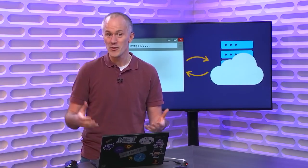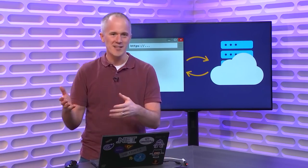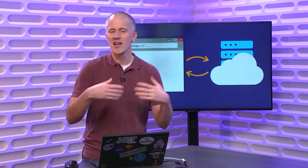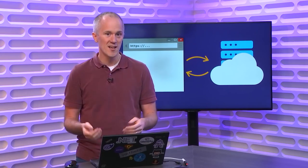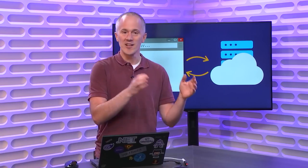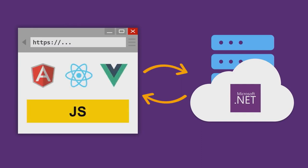.NET has always had a great story for building server-rendered web apps — apps where you stick some .NET code on a server, and that code generates HTML or JSON in response to browser requests. If you wanted to do anything on the client in the browser, that meant you had to write some JavaScript. There's lots of great things about JavaScript, but there's also some additional cost and overhead of having to bridge these two very different developer worlds with different languages, different frameworks, and different tools.